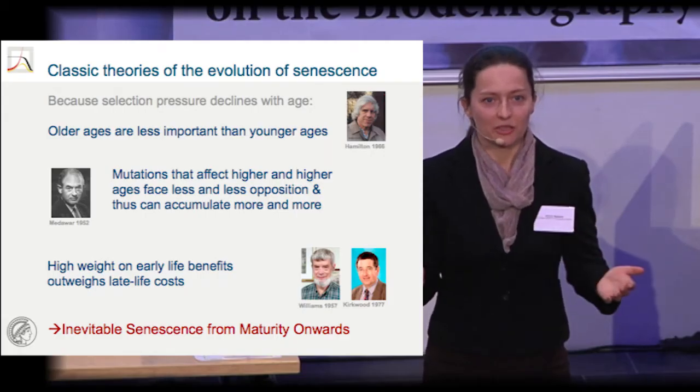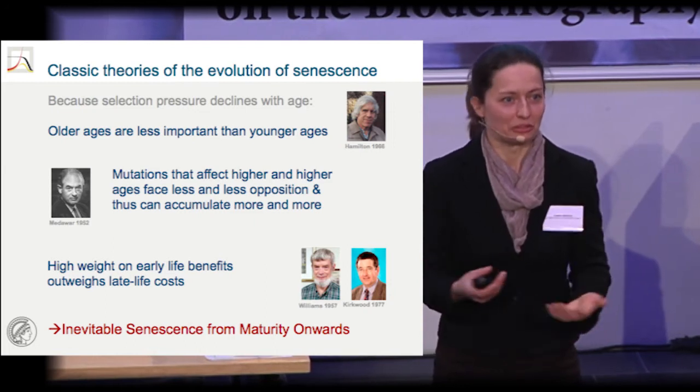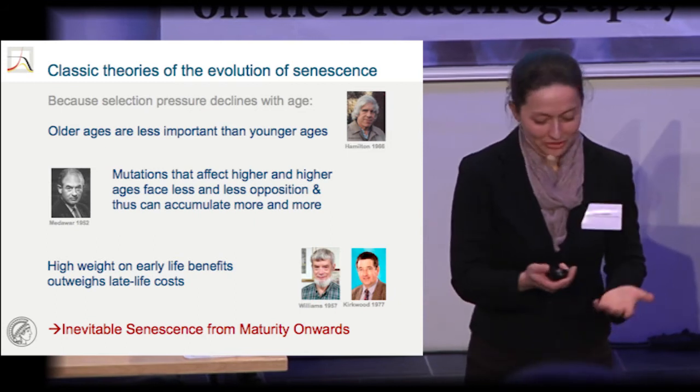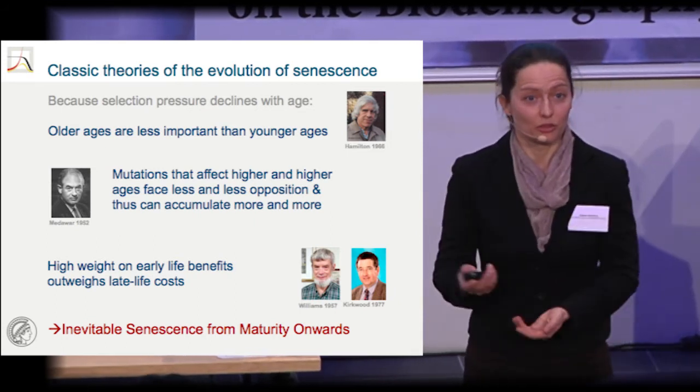So these theories predict that senescence should be inevitable, meaning that the increase in mortality is inevitable and the falling reproduction should be inevitable. But not just for humans, but for any conceivable species. Because if you think of the Lotka equation, which is so beautiful in demography, that just includes survival and reproduction. And any organism has to survive and reproduce, so this equation is valid for anything else also that lives. Therefore, basically for all species, mortality should go up.